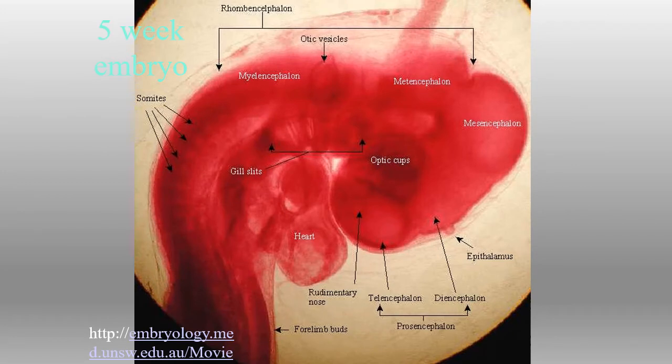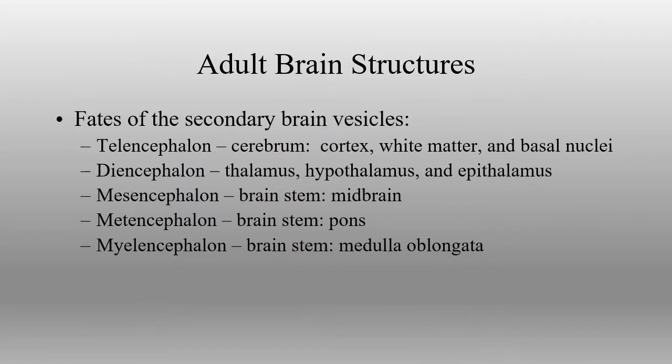Here we have a five-week-old embryo in development. Those different regions now are going to start to develop into the final brain structures of the adult. The telencephalon is going to give rise to essentially what we think of as the brain — this is the cerebrum, the entire cerebral region of the brain — and it's going to eventually surround the diencephalon.